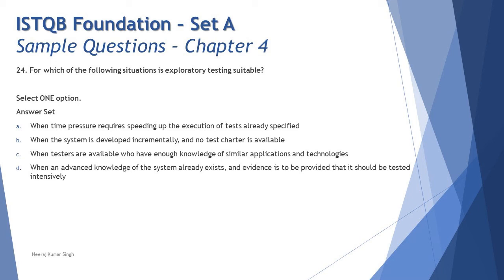If you have the requirements written, you always approach formally. It's only when you don't have the specification written that you look to exploratory testing. Exploratory testing is not always the primary approach. Option B says: when the system is developed incrementally and no test charter is available. A test charter is one of the key components for exploratory testing — without it you cannot run exploratory testing. So option B is also incorrect.